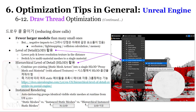드로우콜을 줄이려면 많은 작은 오브젝트들을 큰 오브젝트로 묶어서 한 번에 넘기는 것이 드로우콜 수를 줄이는 방법입니다. 다만 단점으로는 콜리전이 정확하지 않을 수 있고, 라이트맵이 커지고, 메모리를 많이 잡아먹는 등의 트레이드오프가 있습니다.